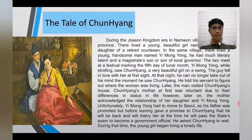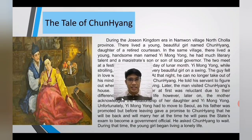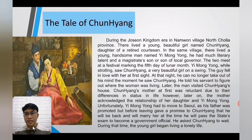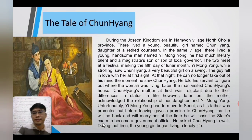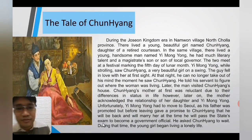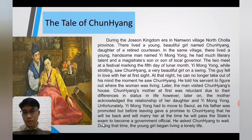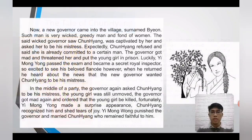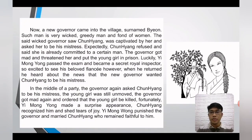The classic love story has since been rendered into several films, plays, and other dramatic forms. Multiple versions exist, but they all adhere to the same basic plot. In the summary: the character Mong-yong punished the governor and married Chunyang, who remained faithful to him.